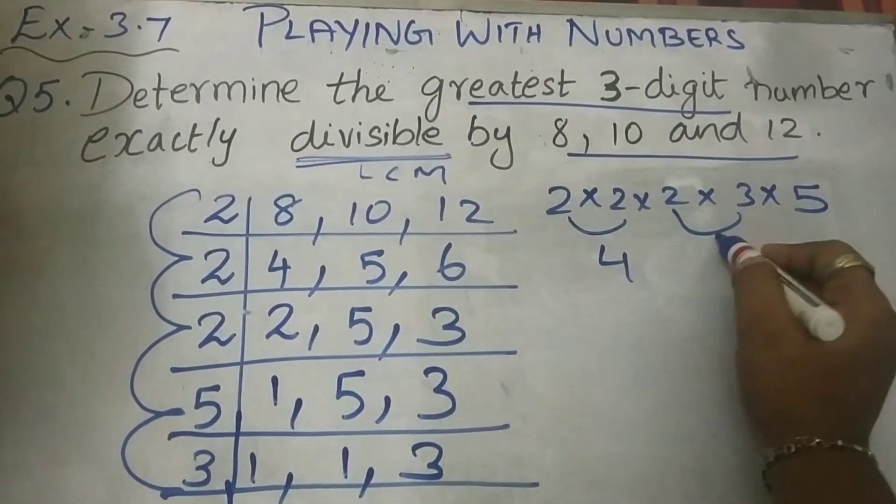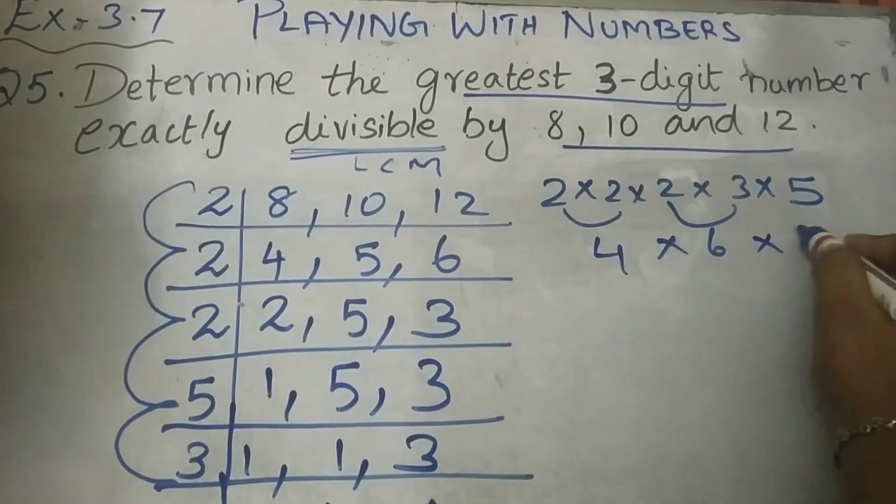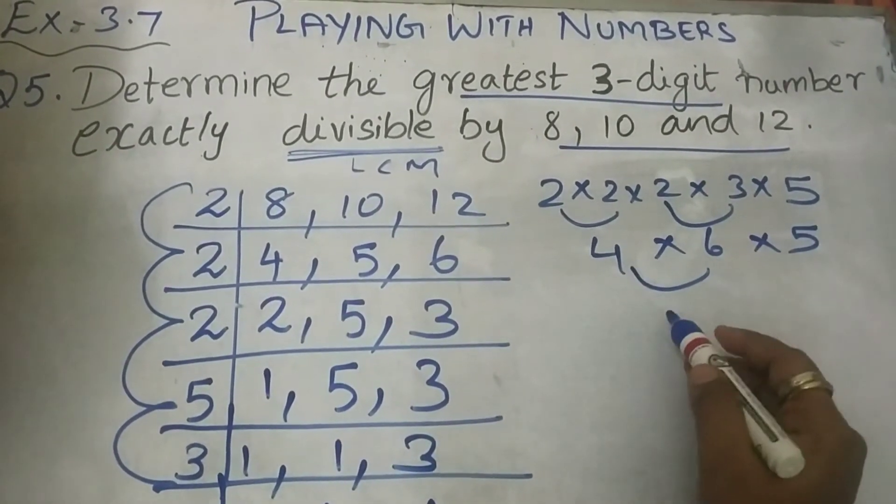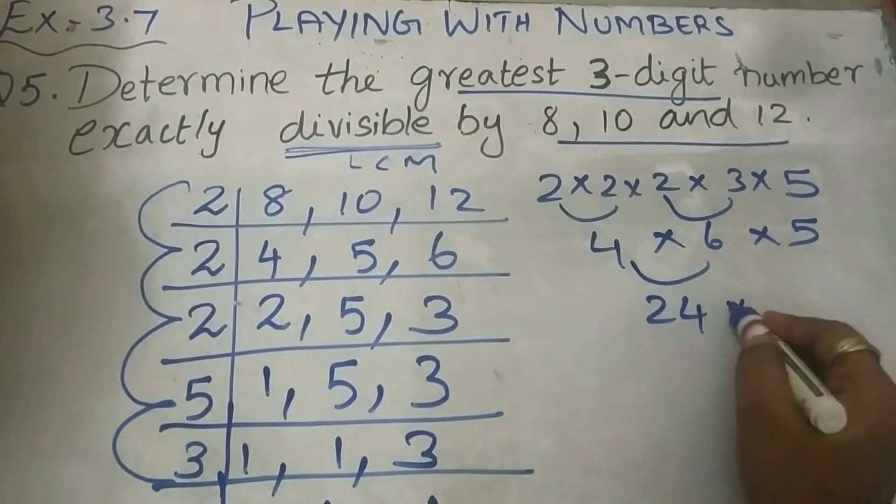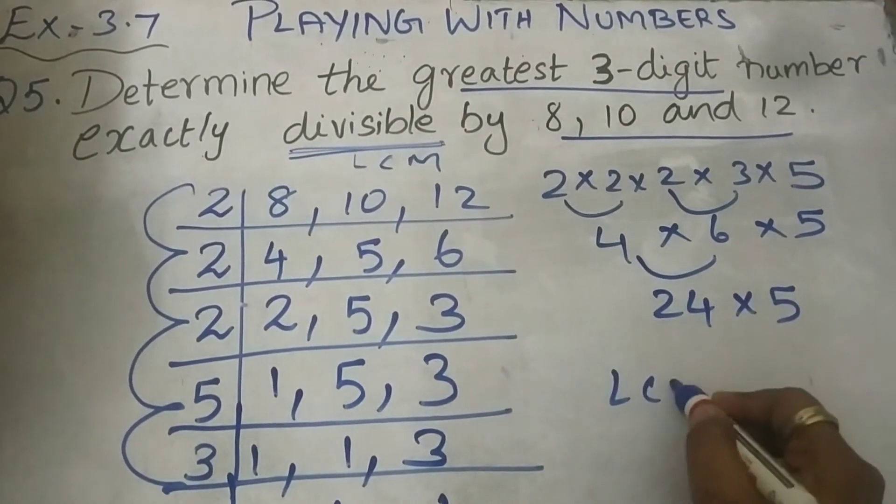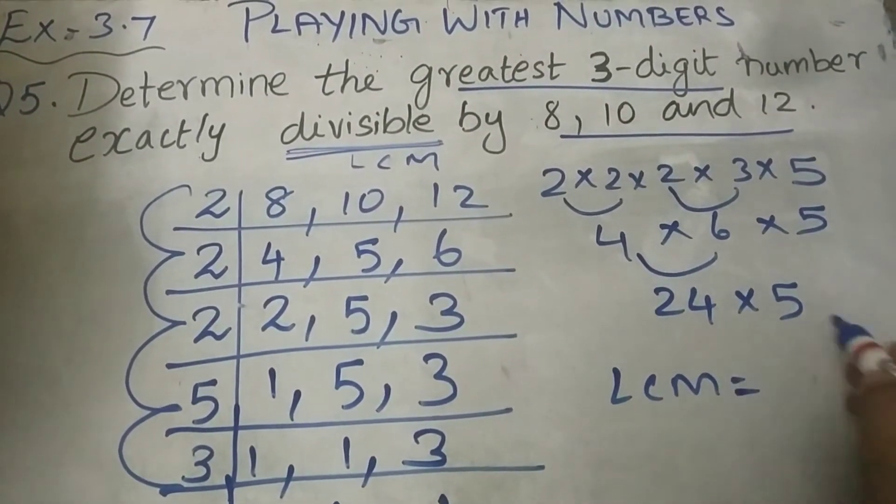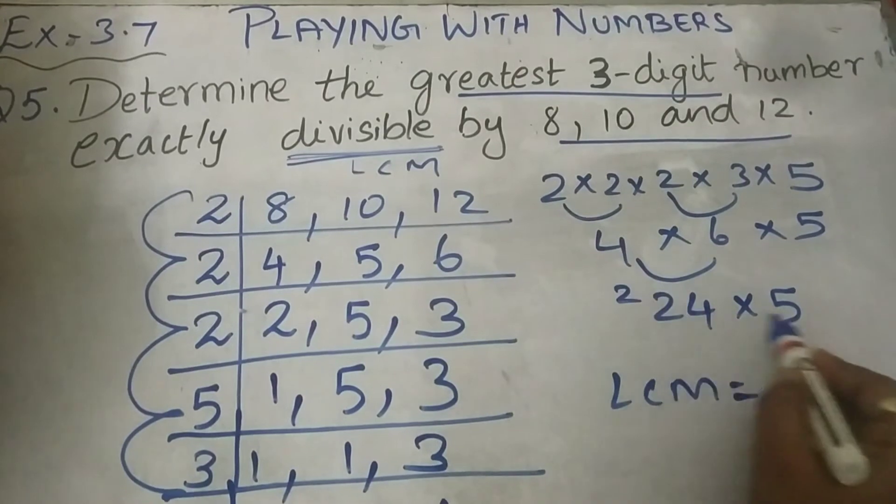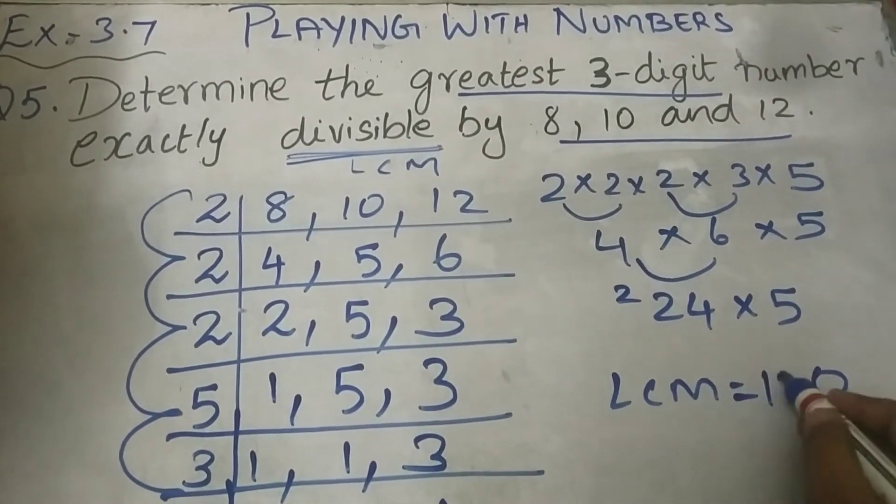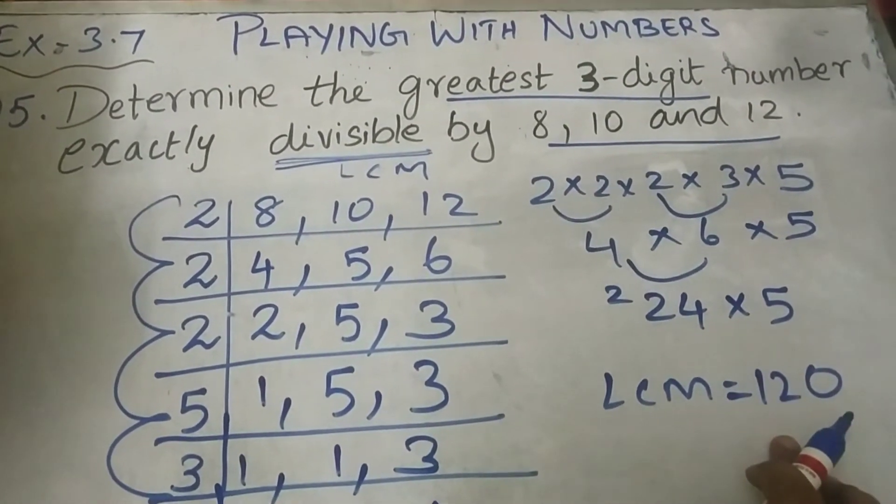What is our LCM? 2, 2's are 4. 3, 2's are 6. You can solve like this also. 6, 4's are 24. 24 into 5. So, what is your LCM you are getting? 5, 4's are 20, 2 carry. 5, 2's are 10, 11, 12. You are getting your LCM as 120.